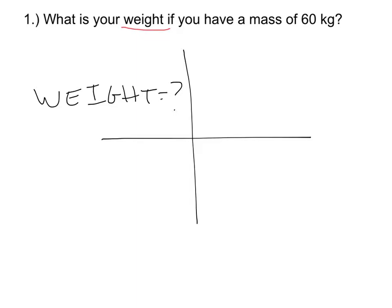The next step is to look for some given information. In this case, it's got a number, 60 kilograms. It also tells me that that number is a mass. Now any time you've got a number in kilograms, it's going to automatically be a mass.